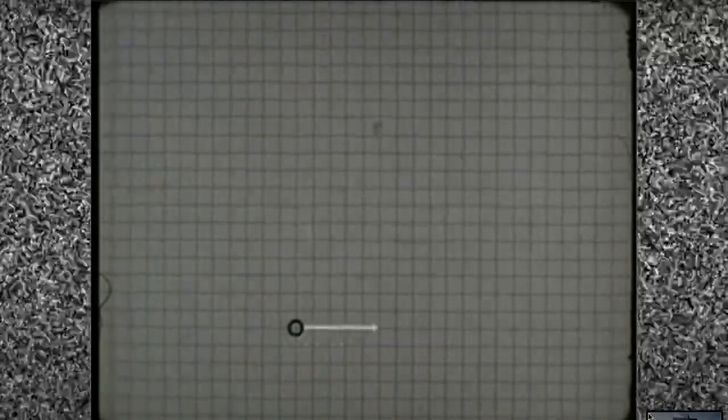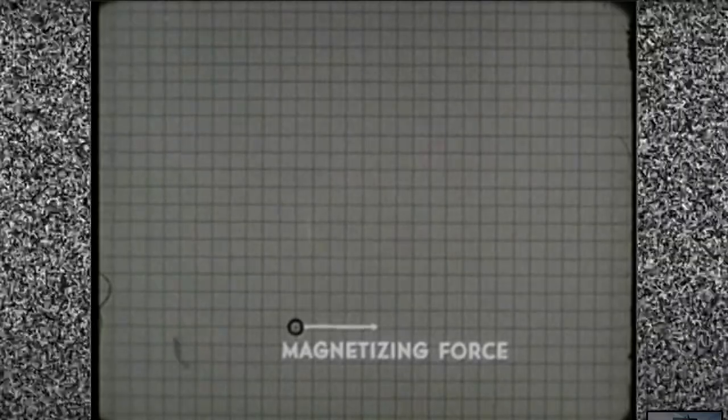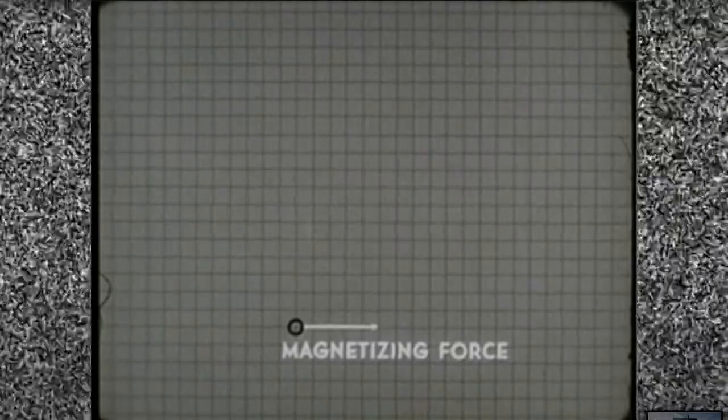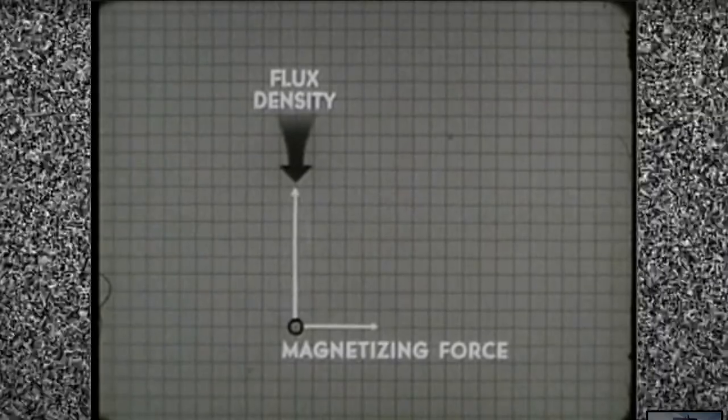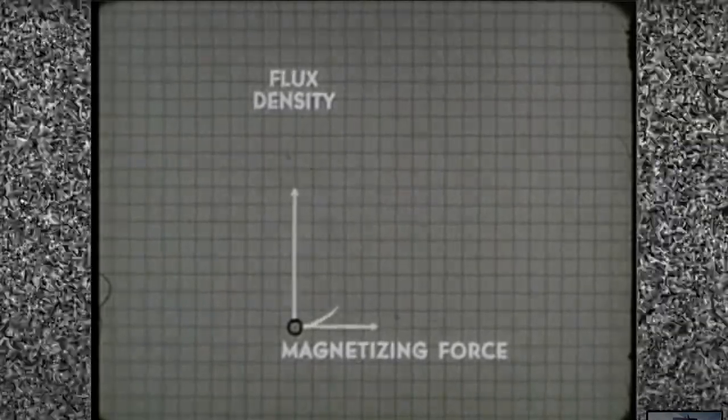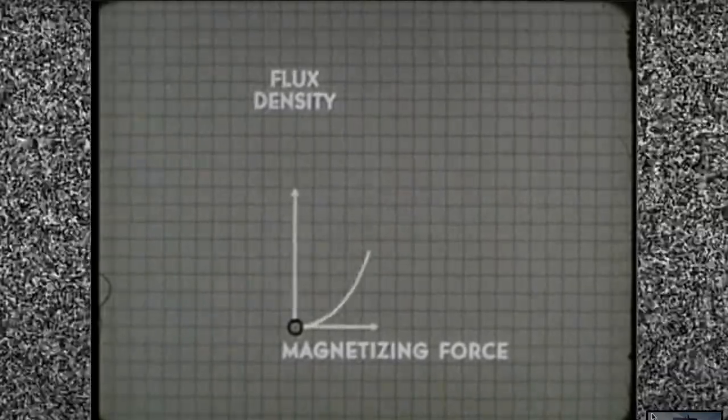Initially, a relatively small amount of magnetizing force produces a relatively high flux density. The curve on the graph will begin like this.